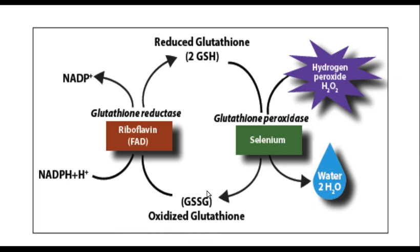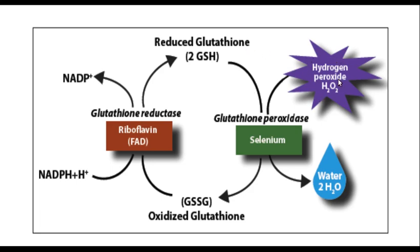Once Glutathione becomes oxidized, it is of no use because it cannot participate in the next reaction. It has to be reduced back to its reduced Glutathione state to keep giving protection to the cell. Conversion of oxidized Glutathione to reduced Glutathione is mediated by the enzyme Glutathione reductase, which requires the cofactor NADPH. NADPH is produced in the pentose pathway with the help of the enzyme Glucose 6-Phosphate Dehydrogenase. Absence of this enzyme means no NADPH is produced, Glutathione reductase cannot work, oxidized Glutathione cannot be converted back, and the cells become susceptible to damage by oxygen species.